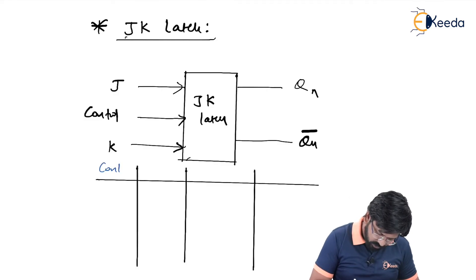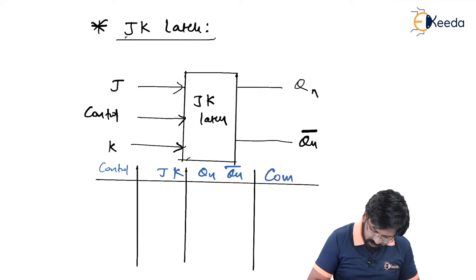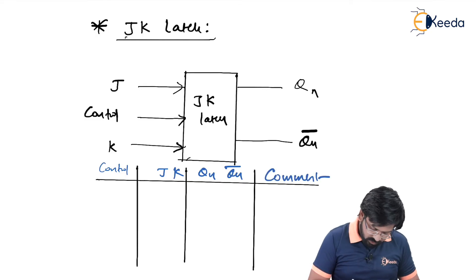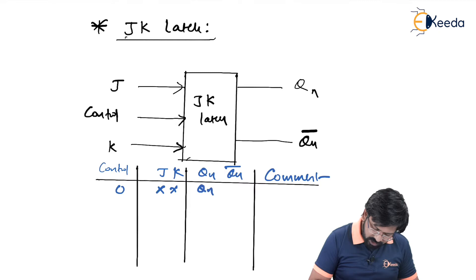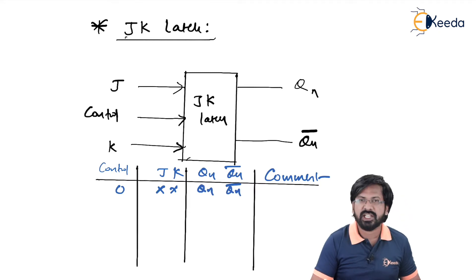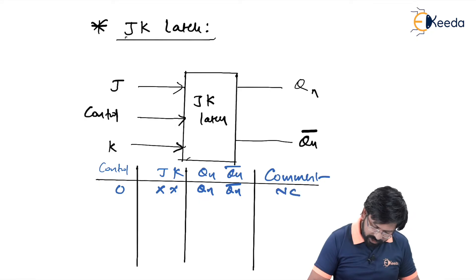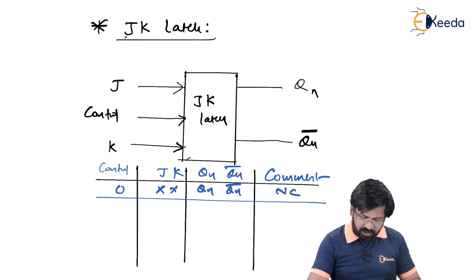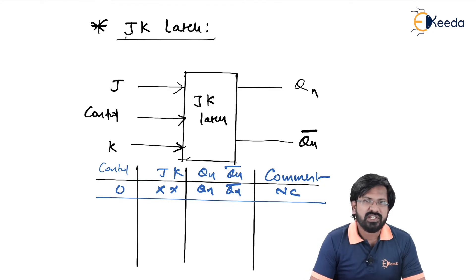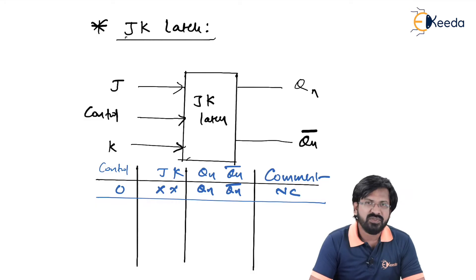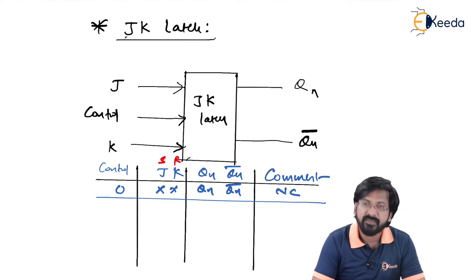We will have control input, J, K, Qn and Qn bar, and accordingly we are going to comment on this. When control equals 0, J and K become immaterial and output remains no change — Qn remains Qn and Qn bar remains Qn bar. If you see the internal diagram of JK latch, you will see it is almost 90% SR latch only, so it behaves 90% as if it is SR latch. Just for reference I will write S and R on top of JK.